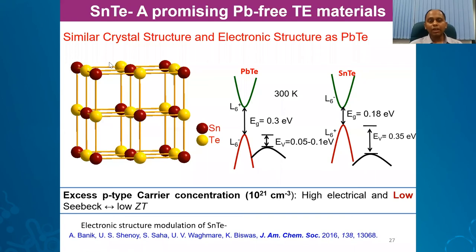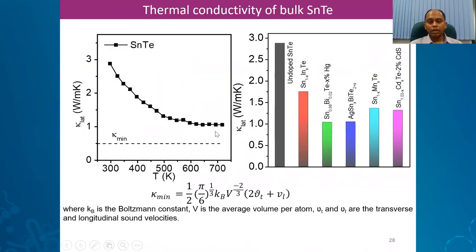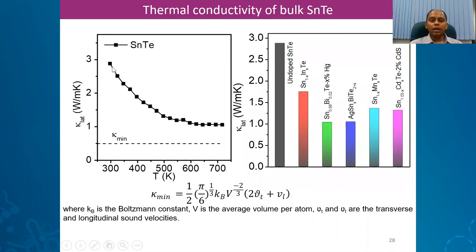Tin telluride has thermal conductivity around 3 W/m·K at room temperature, decreasing to about 1 W/m·K at high temperature. The theoretical minimum of lattice thermal conductivity, calculated from sound velocities and crystal volume, is 0.5 W/m·K. If we can decrease the thermal conductivity from 3 down to near this minimum without nanostructuring, without mesostructuring, without any materials engineering — just by playing with chemistry — the ZT would increase enormously.